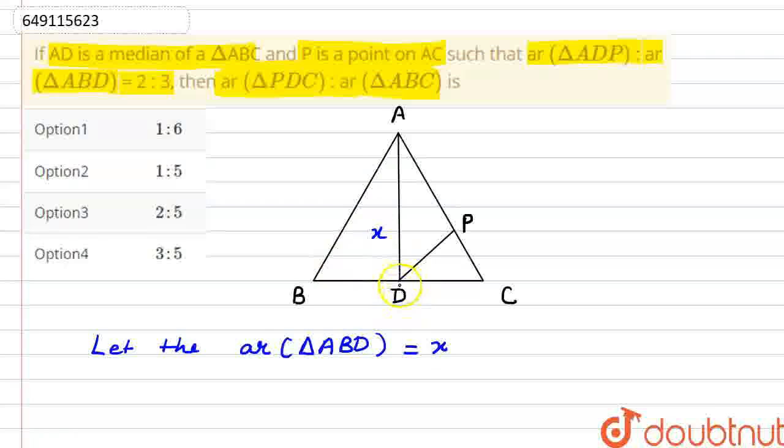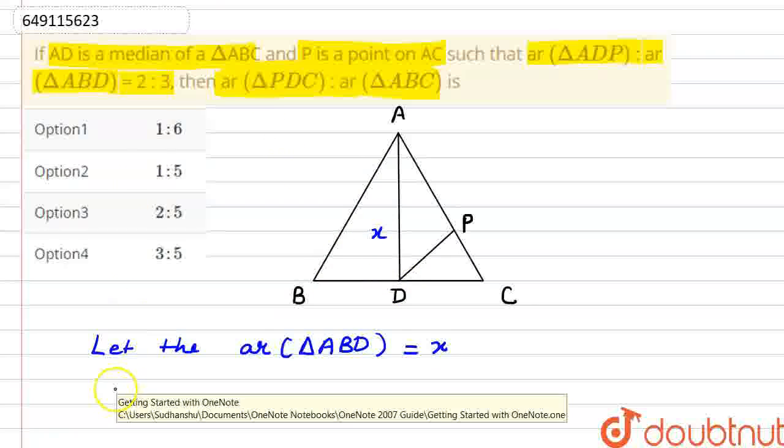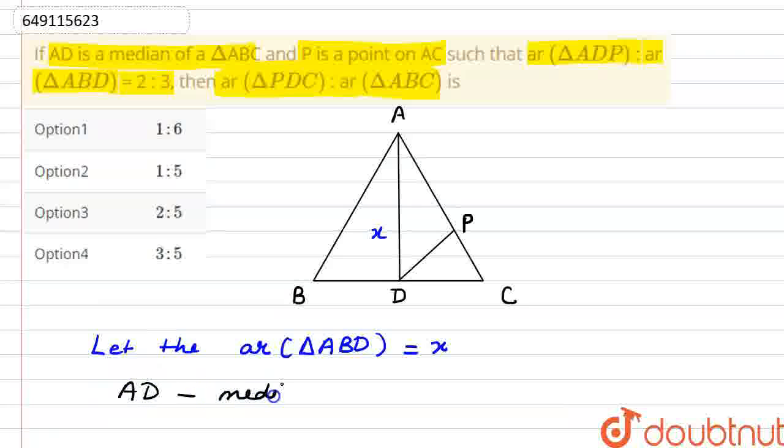We know AD is a median. So, AD is the median of triangle ABC.